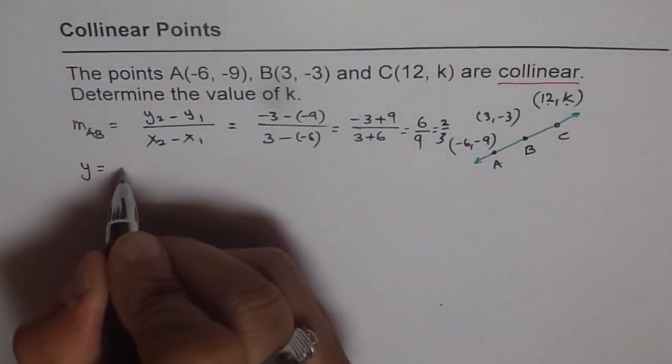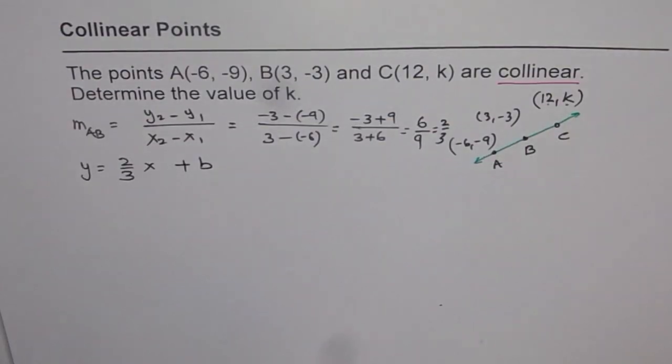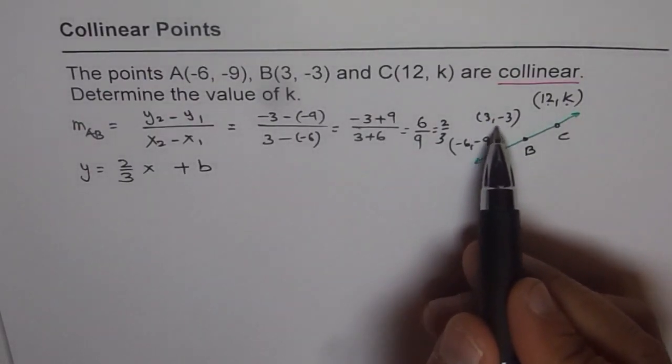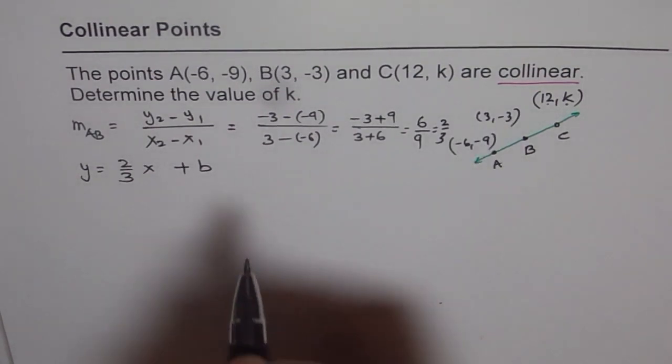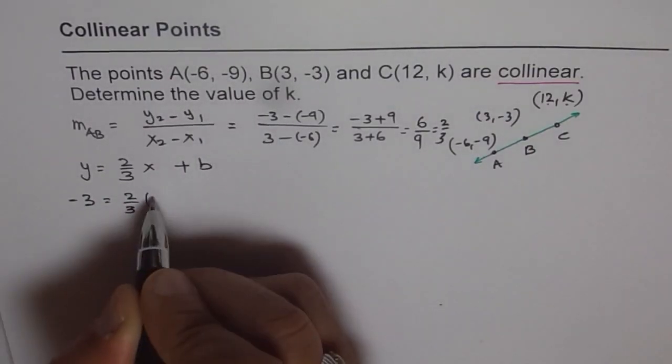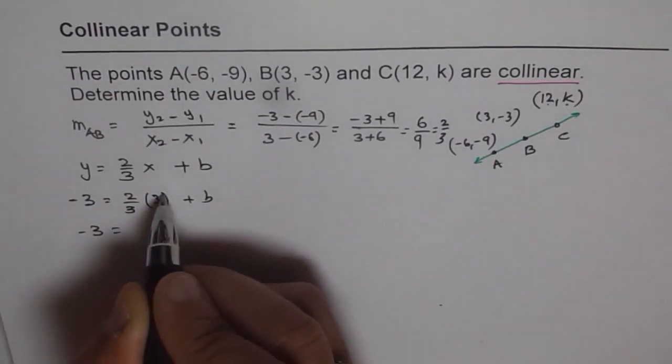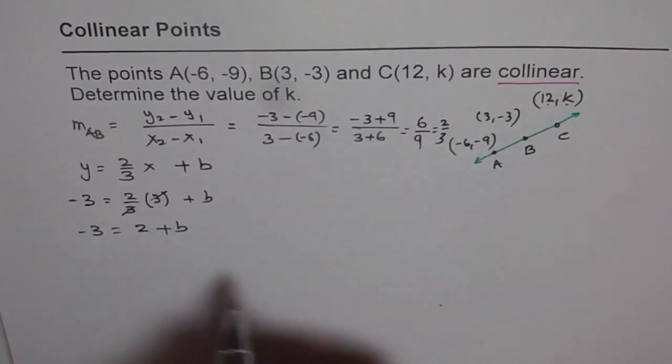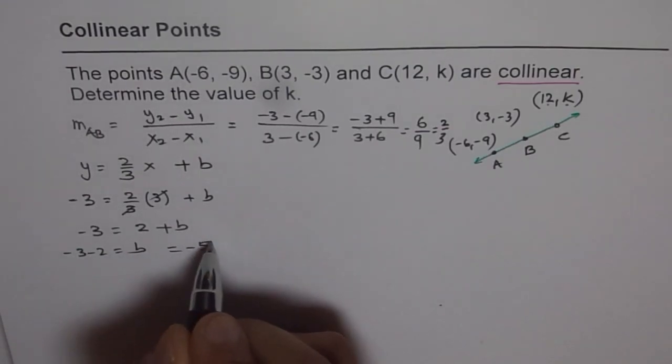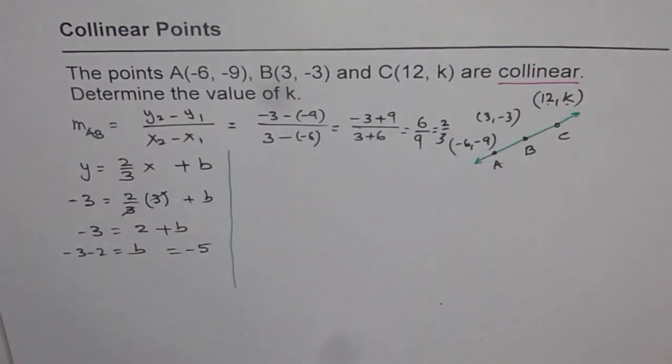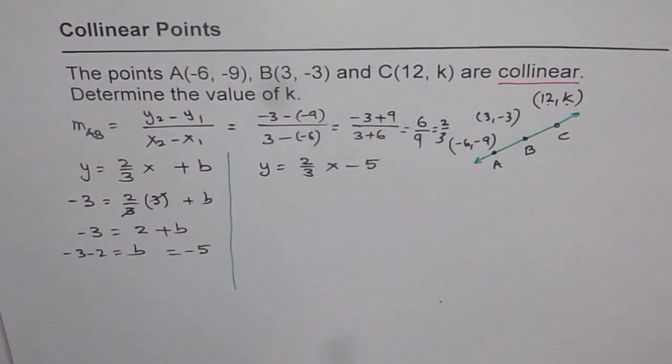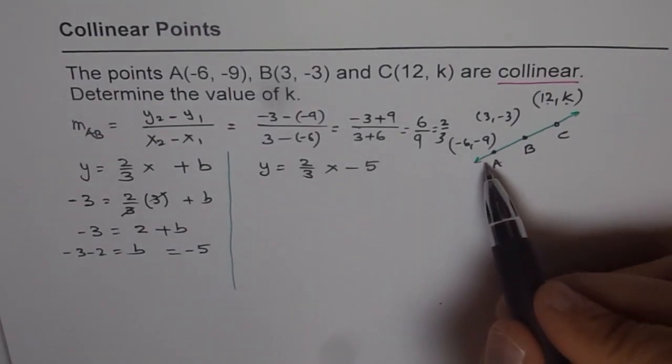Now we can write the equation of a line as Y equals 2 over 3X plus B. How will you find B? To find B, we can use any one of these points. Let's take (3, -3). It helps because 3 and 3 will cancel out. So -3 equals 2/3 times 3 plus B. You get -3 equals 2 plus B. From here, -3 minus 2 equals B, so B equals -5. So the equation becomes Y equals 2/3X minus 5.